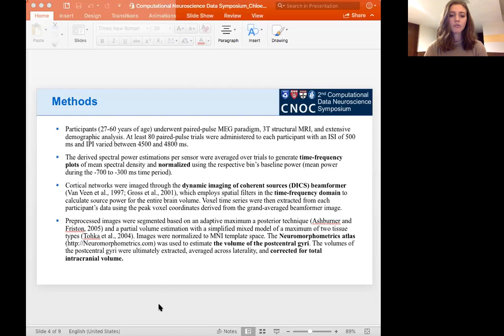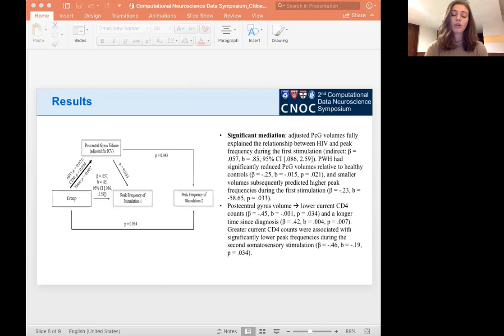As for our results, we applied our data to a full mediation model and as seen to the left, persons with HIV had significantly reduced postcentral gyrus volumes relative to healthy controls. These smaller volumes subsequently predicted higher peak frequencies in response to the first somatosensory stimulation, although this was not seen after the second stimulation.